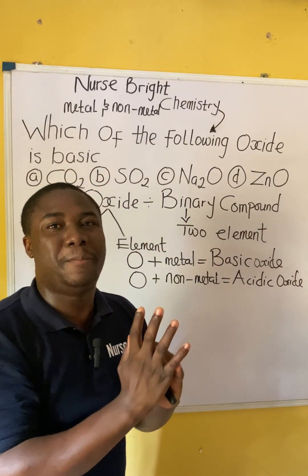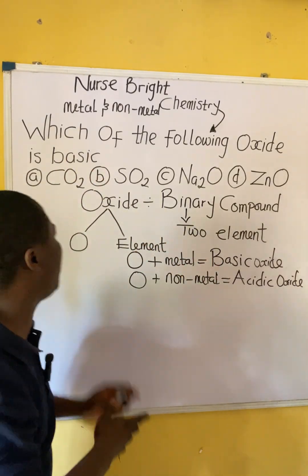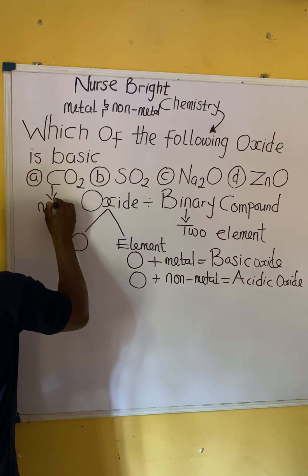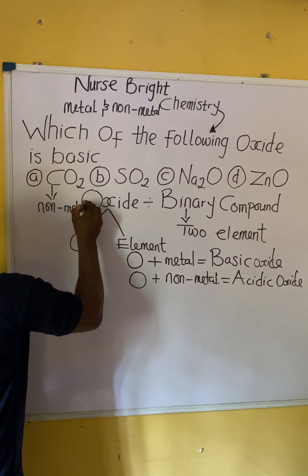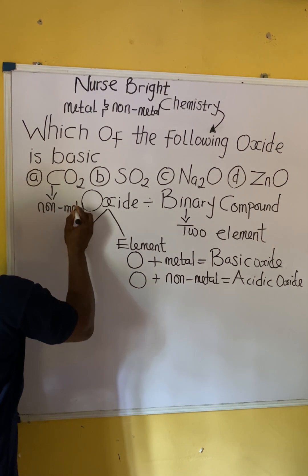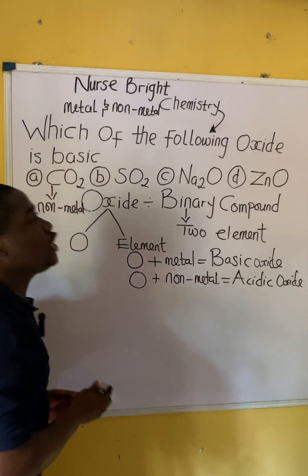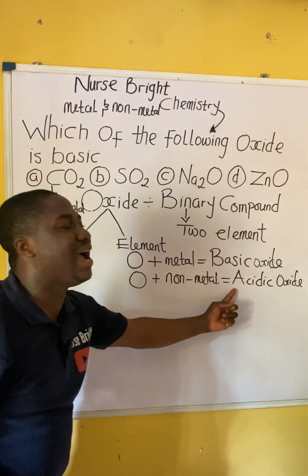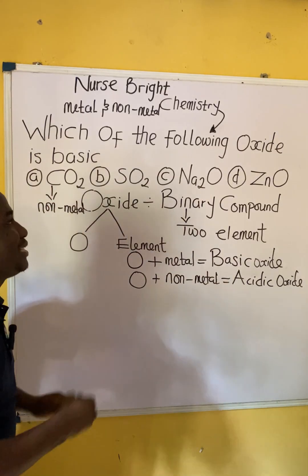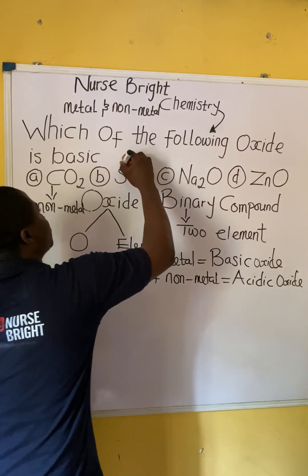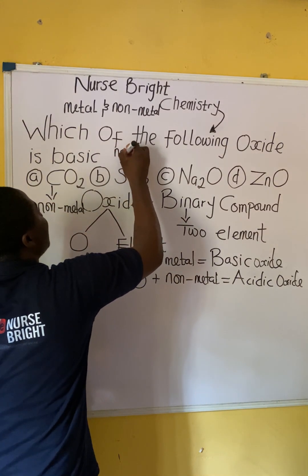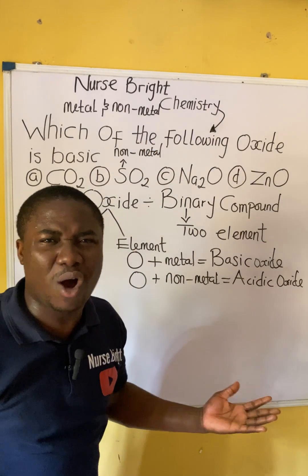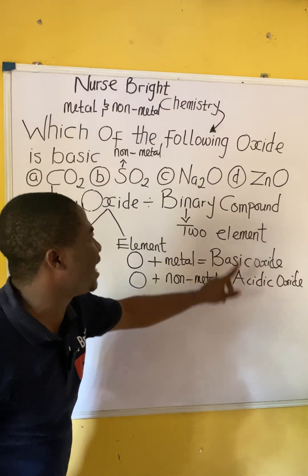There is chemistry behind carbon attaching to oxygen to form CO2. You should understand that carbon is not a metal — carbon is a non-metal. Since carbon is a non-metal, CO2 can never be a basic oxide; it will be an acidic oxide. Same applies to sulfur — sulfur is a non-metal. So when sulfur combines with oxygen, it forms an acidic oxide.